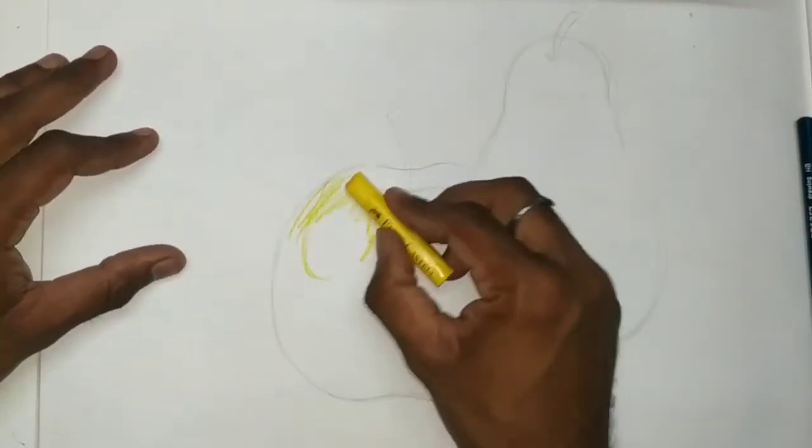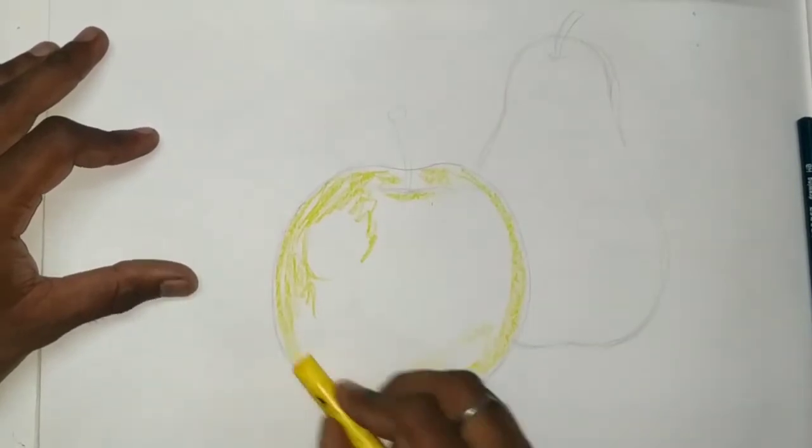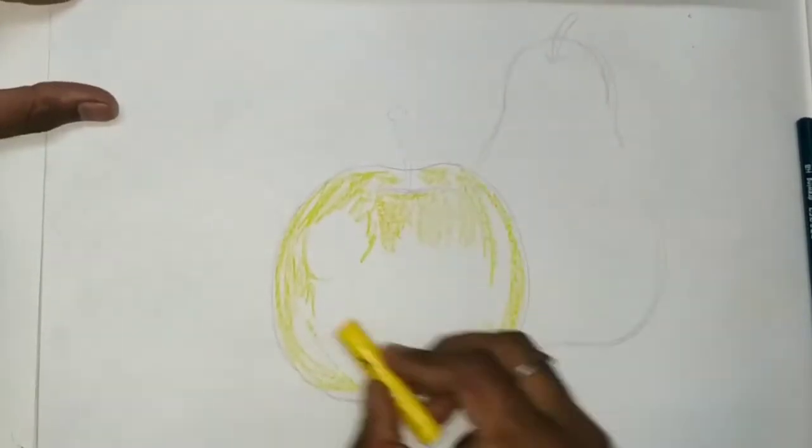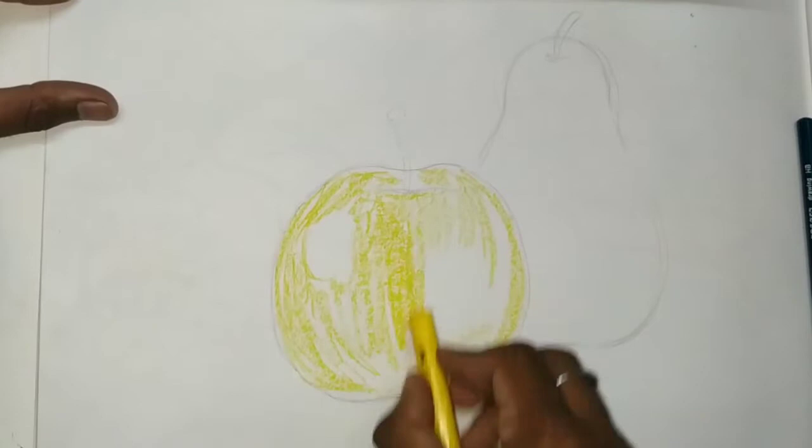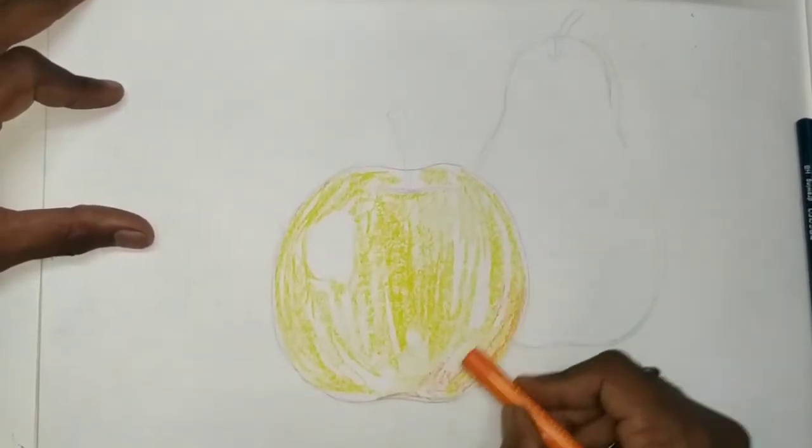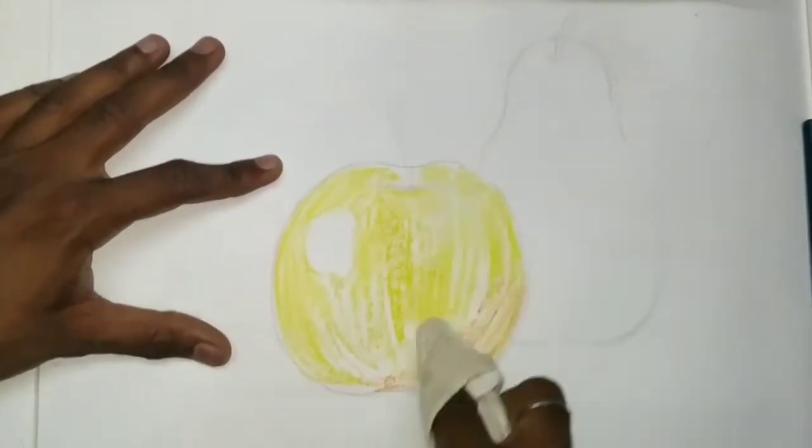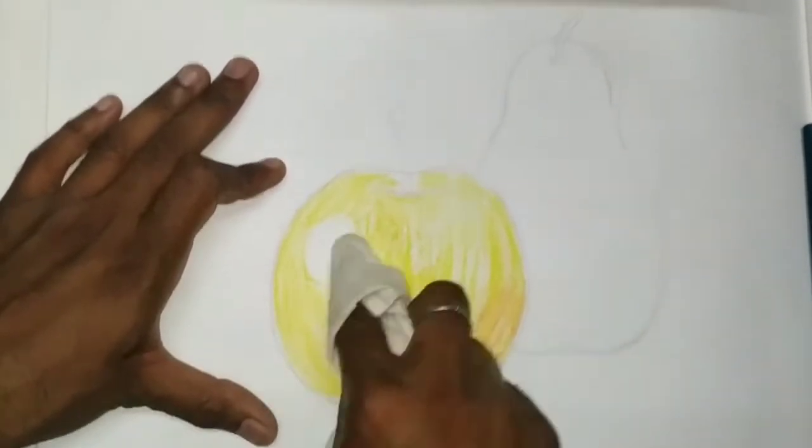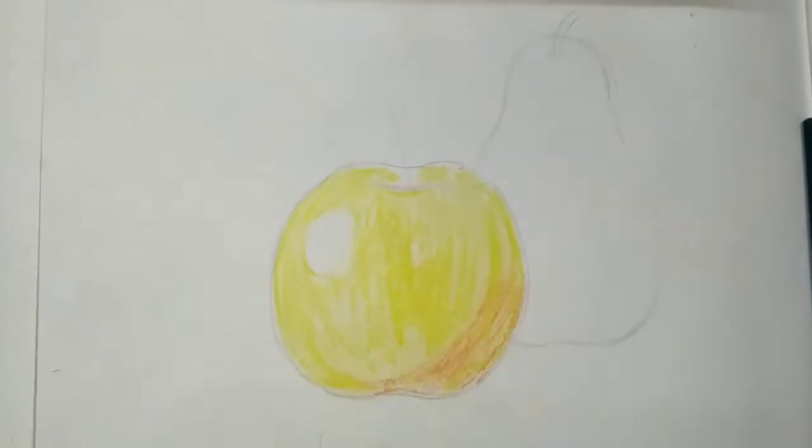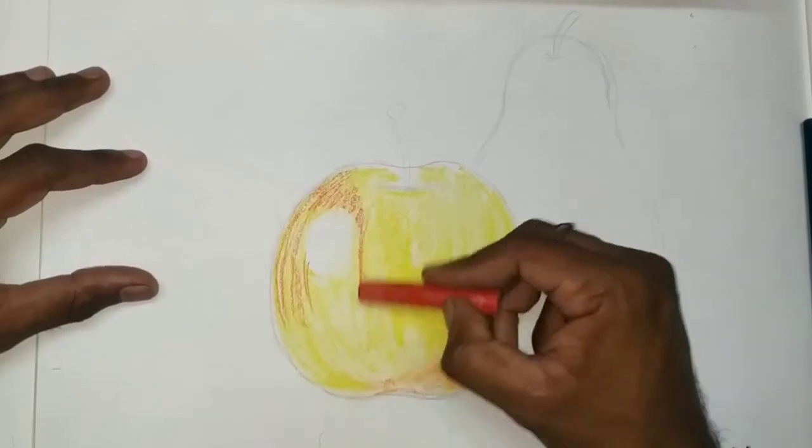Now we will color it with help of yellow color. First yellow color then orange color. With help of cotton or cloth, colors we have mixed and smudged.